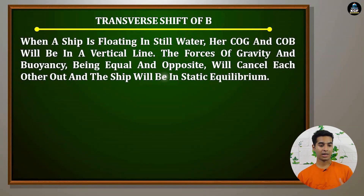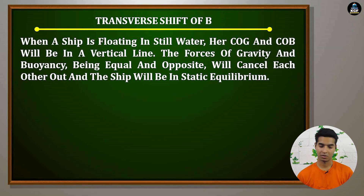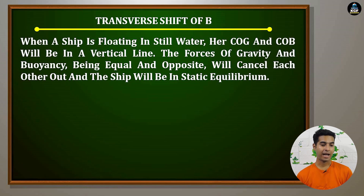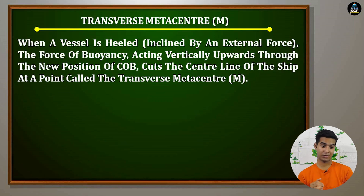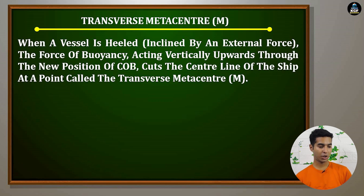Transverse shift of B says that when a ship is floating in still water, her COG and COB will be in a vertical line. The forces of gravity and buoyancy being equal and opposite will cancel each other out, and the ship will be in static equilibrium. Next will be the transverse metacenter M. When a vessel is heeled — inclined by an external force — the force of buoyancy acting vertically upwards through the new position of COB cuts the centerline of the ship at a point called the transverse metacenter.